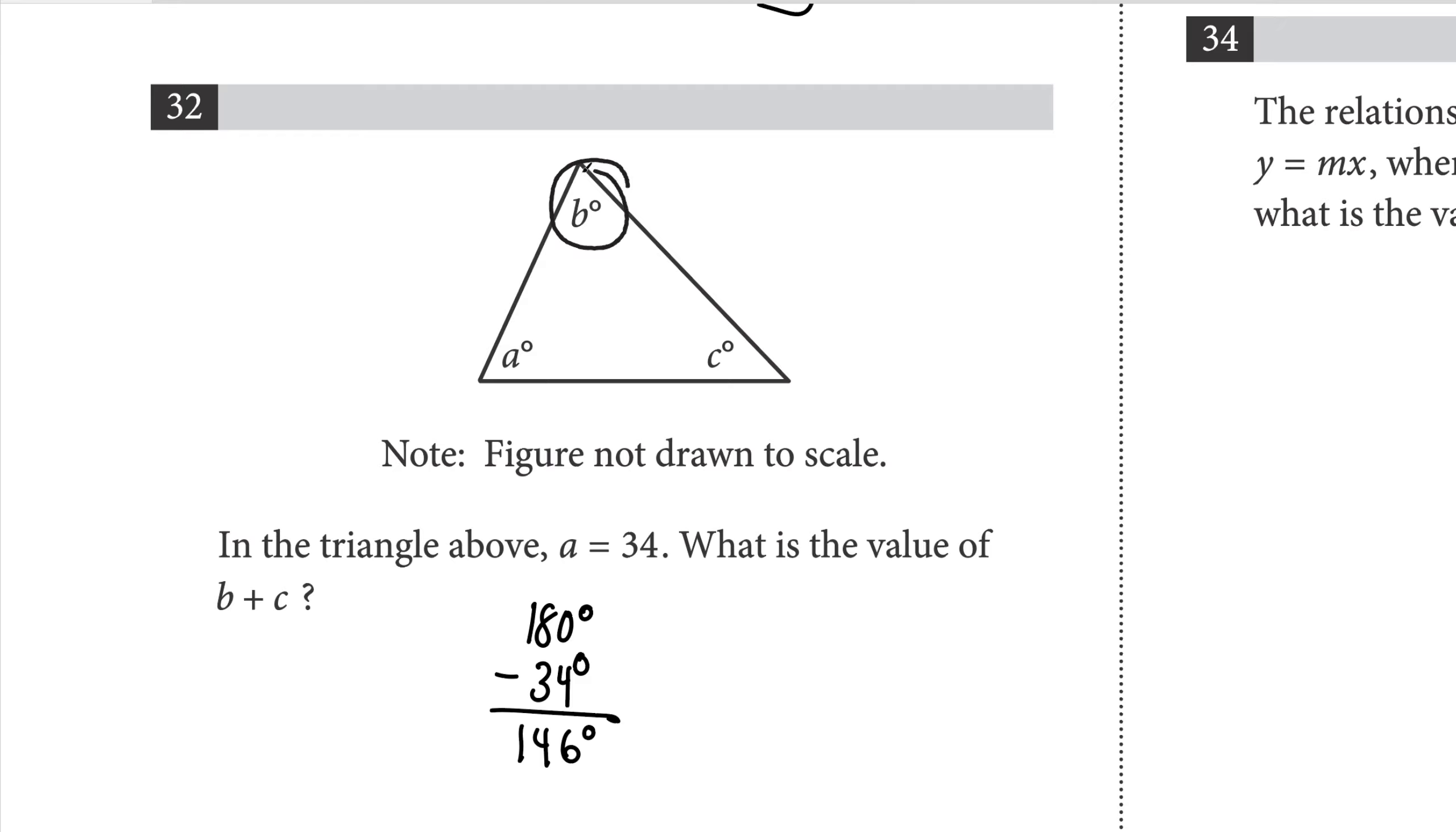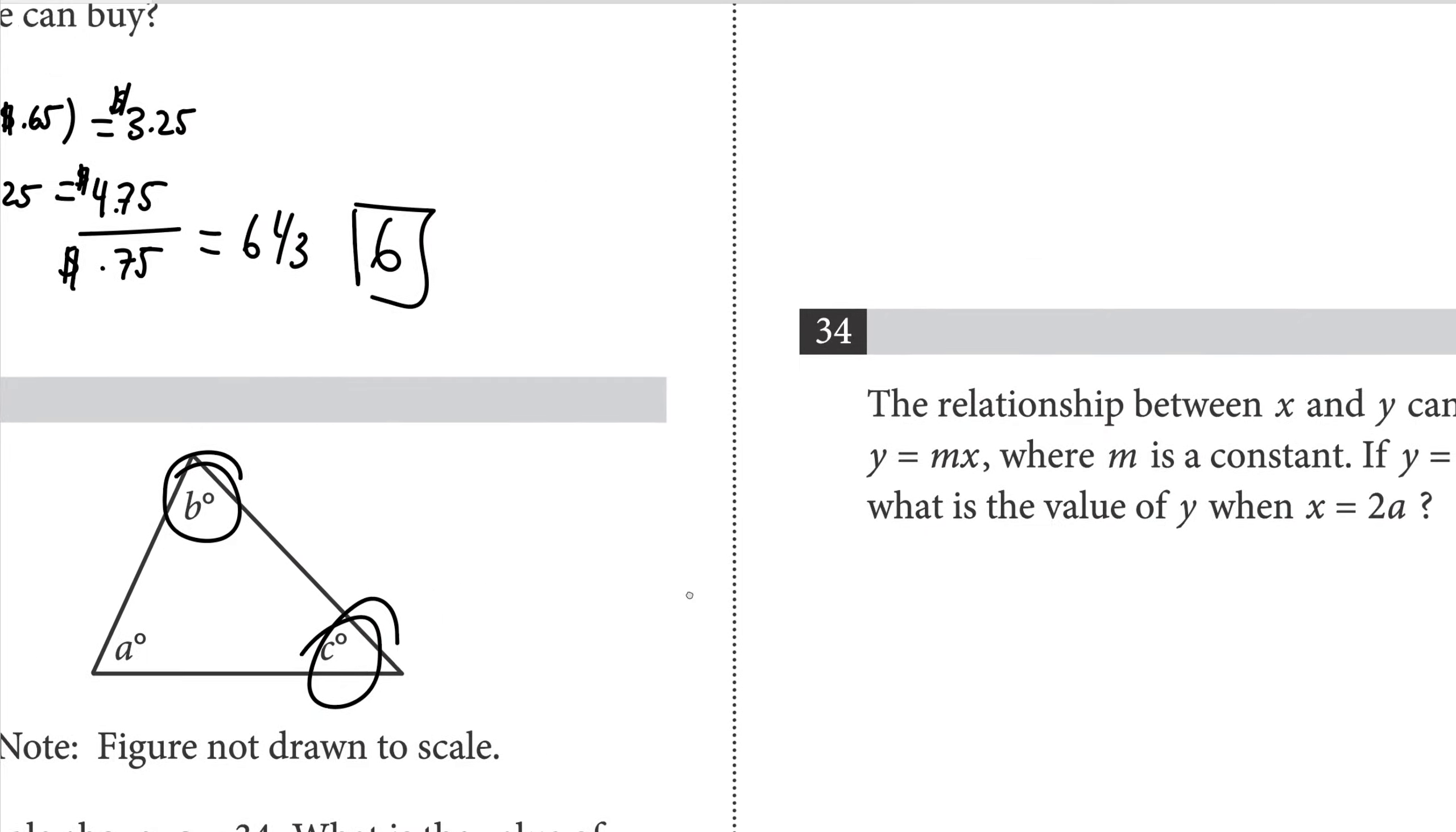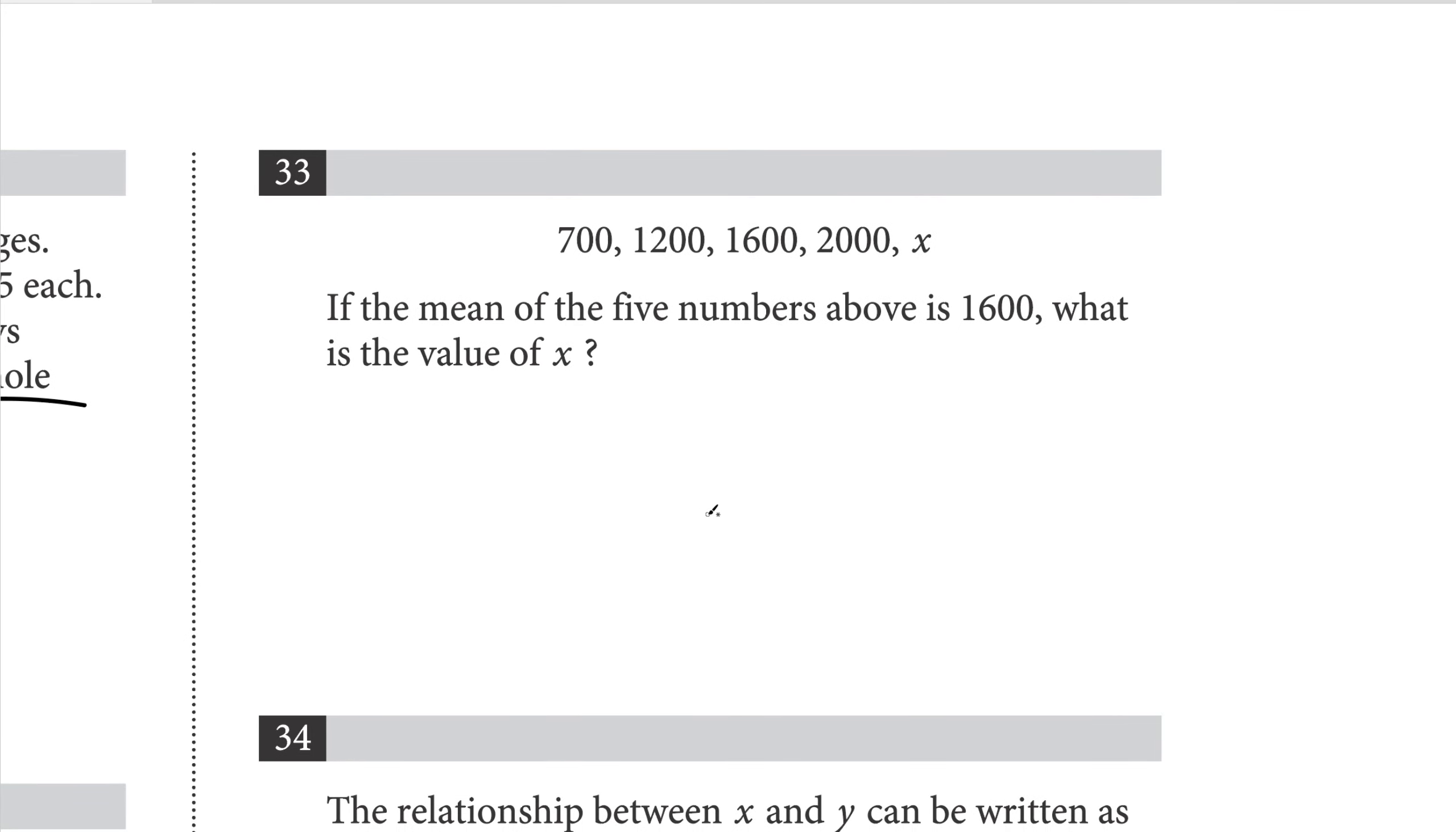If the mean of the five numbers above is 1600, then what is the value of x? Recall that the mean, or otherwise known as the average, is going to be the sum of the numbers divided by how many numbers there are.